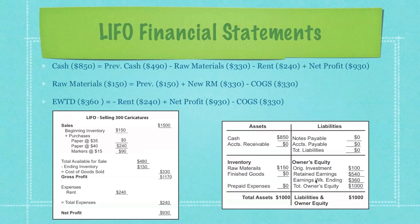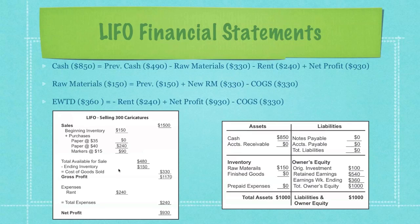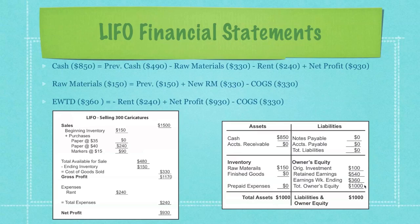Remember, most of the mistakes made by people just starting in accounting are in earnings week ending — that's why we use the income statement. For last in first out, it's the same sort of process: you're just pulling information from the income statement over to the balance sheet, and this is how we keep our earnings straight. Previous cash $490, raw materials $330, which we get from our cost of goods sold minus rent plus net profit of $930 — that's how we get our final cash amount. You have raw materials of $150, which you can pull right from ending inventory. And then you create earnings week ending by subtracting out rent, adding in net profit, and subtracting out cost of goods sold to get your final amount of $360. Add all these up and you get $1,000.